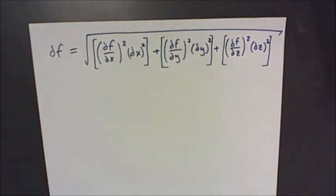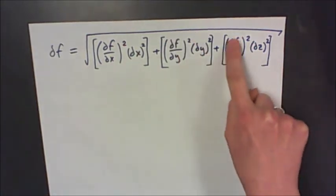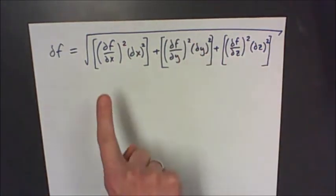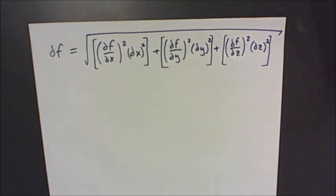We use this formula to calculate all of our uncertainties in this course. This makes use of calculus in that we're going to be taking the derivative of some function with respect to a variable. You'll notice that there's stuff in here and it's all squared — three things that have been squared, added together, and square rooted. It might occur to you that that looks like Pythagoras' theorem, and there's a reason for that: essentially what we're doing is calculating the length of a vector in uncertainty space. That's kind of interesting, but not super important.